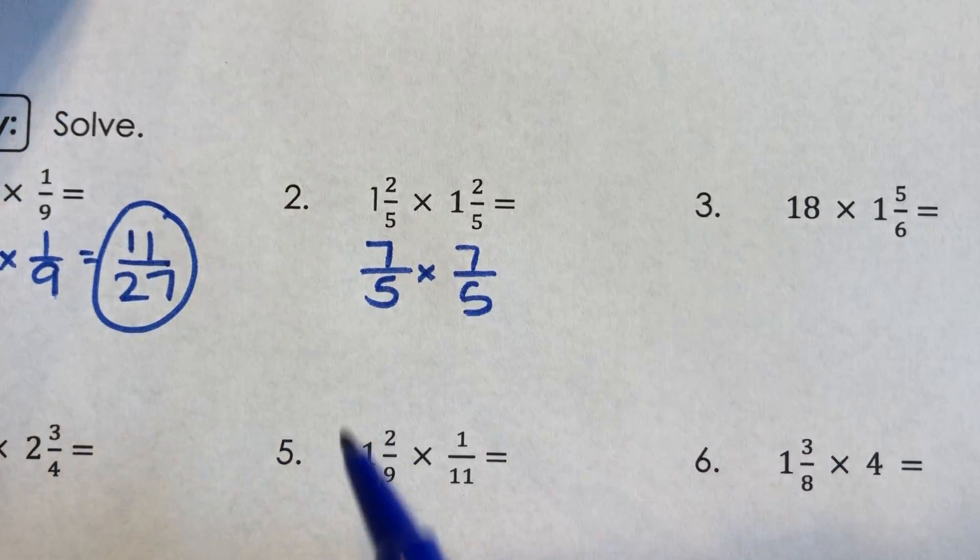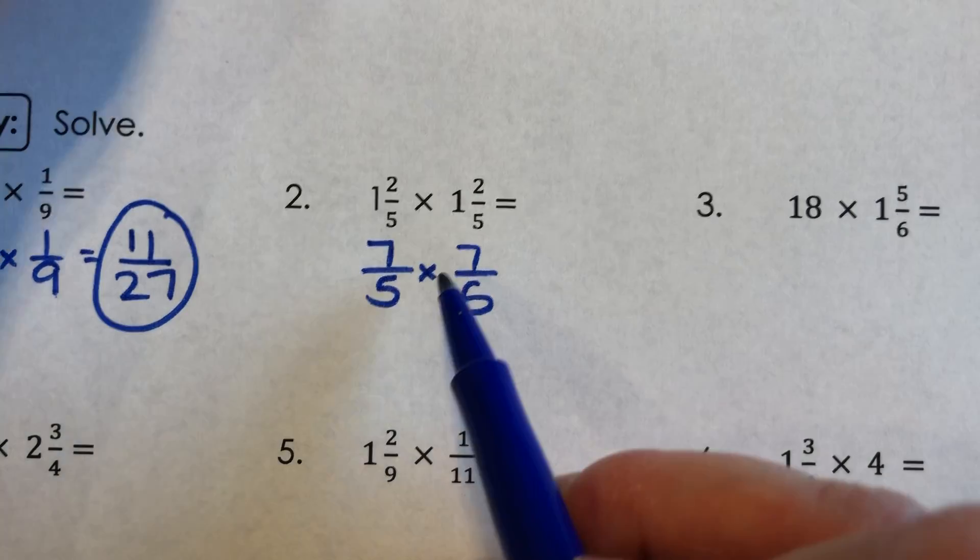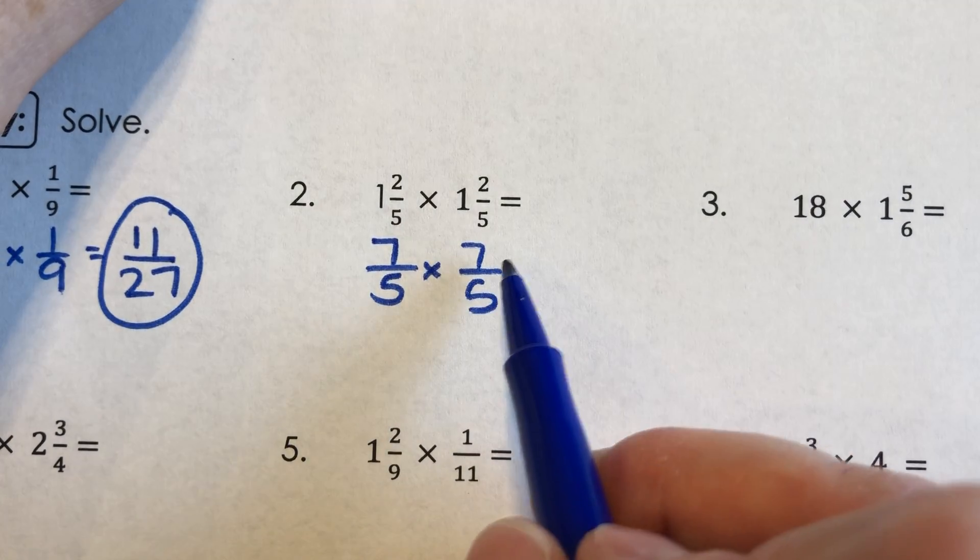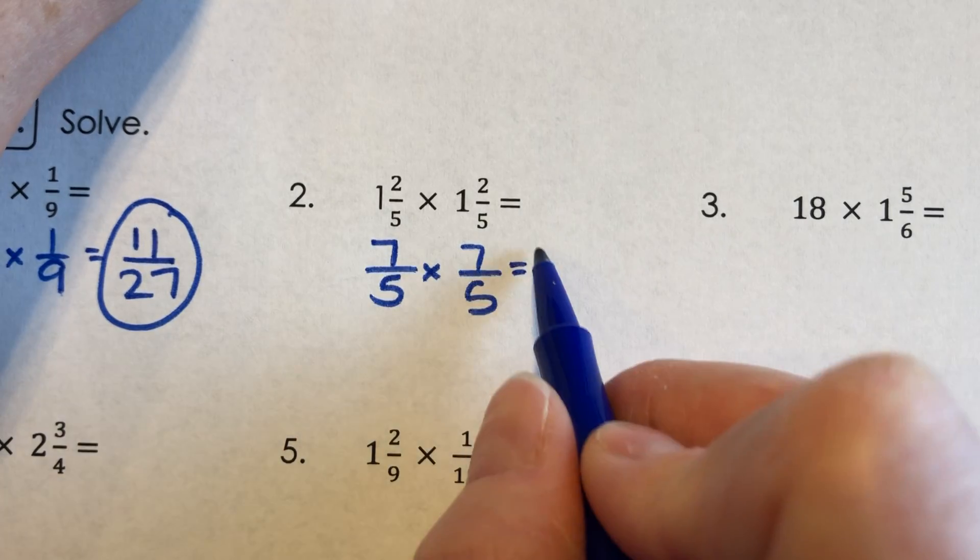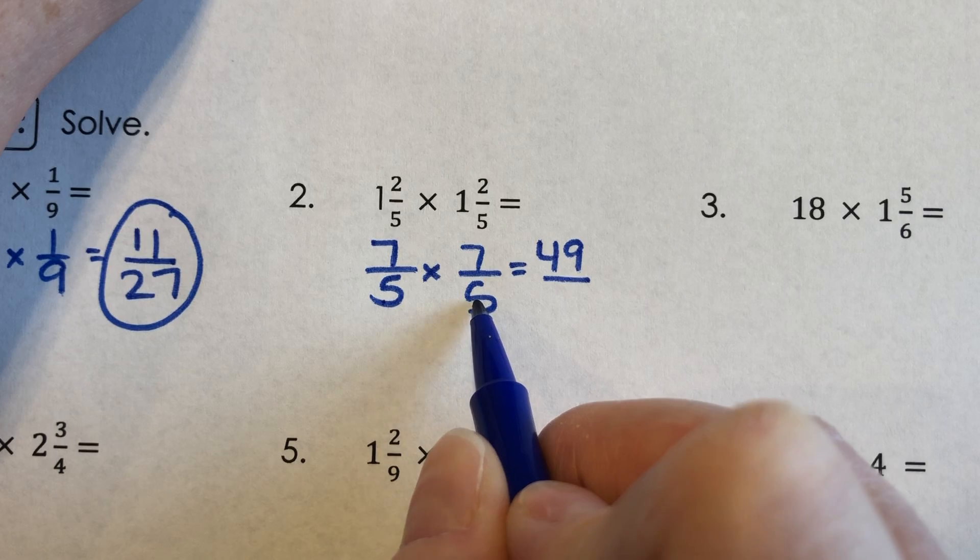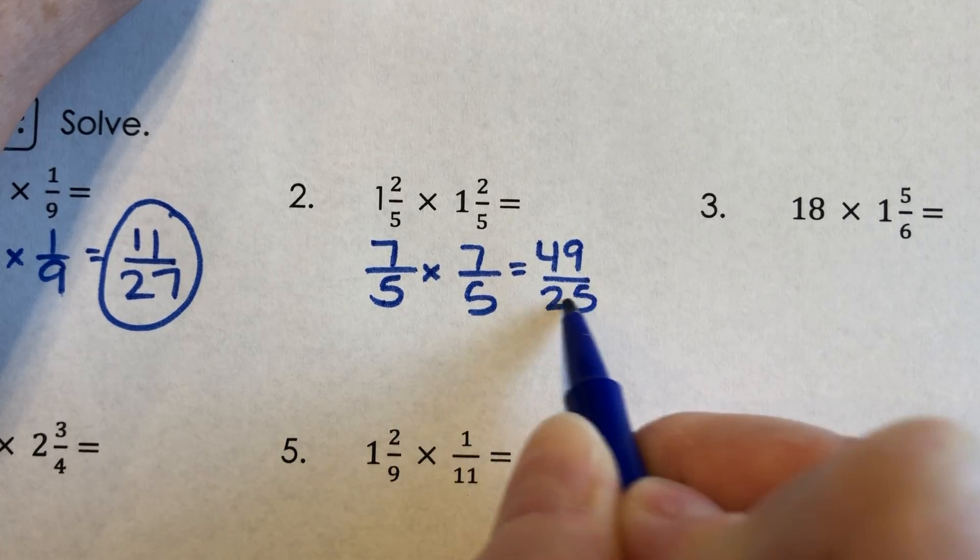When I see 5 and 7, I notice there is nothing I can do. 7 doesn't end in a 5 or a zero. So I'm going to multiply across the top. 7 times 7 is 49. And we'll multiply across the bottom. 5 times 5 is 25.